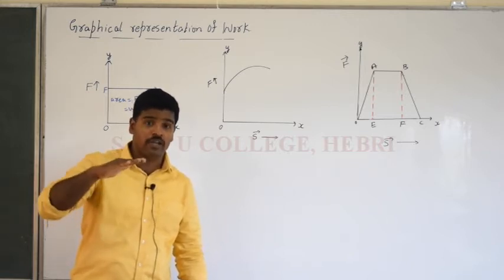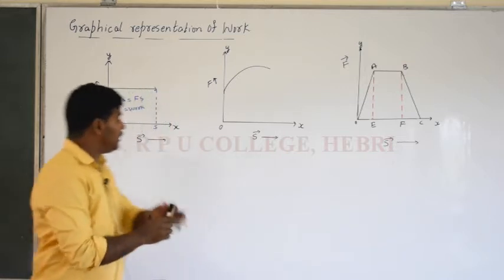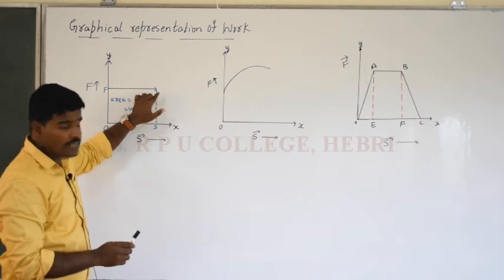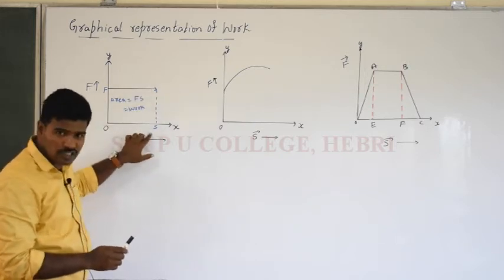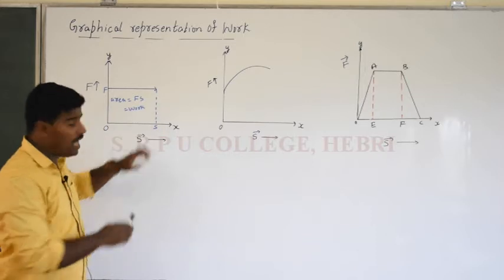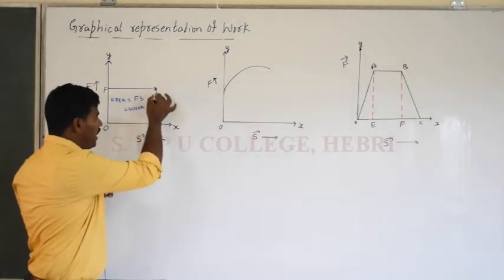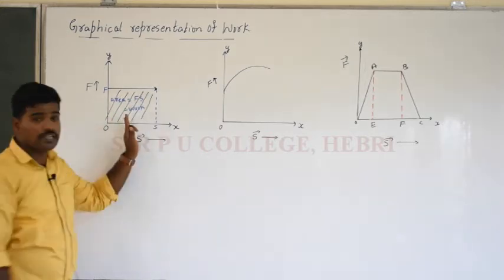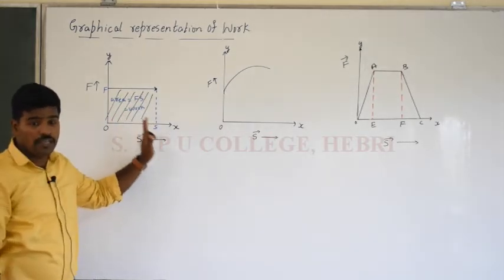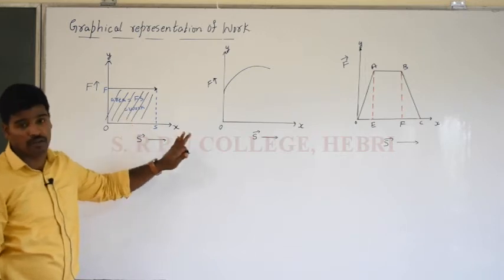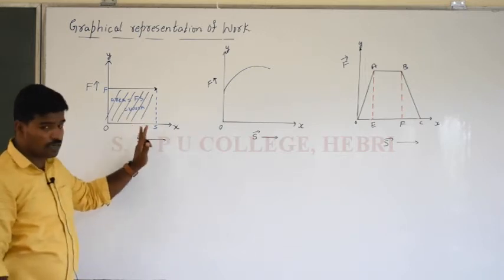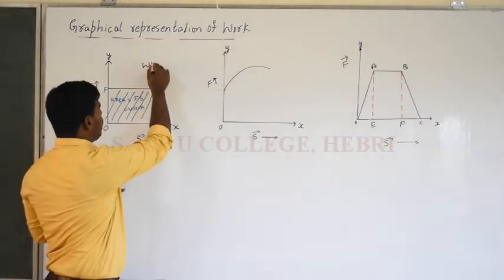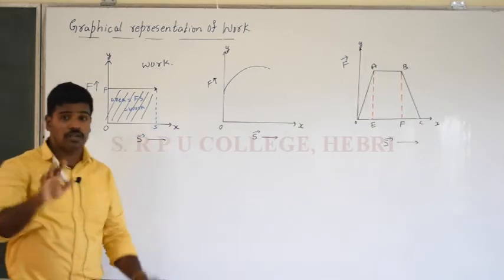Because the constant force is applied, the body undergoes displacement. The nature of the displacement will be a straight line parallel to the x-axis. Therefore, the area under the curve equals the work done. In the force-displacement graph, area under the curve represents work done.